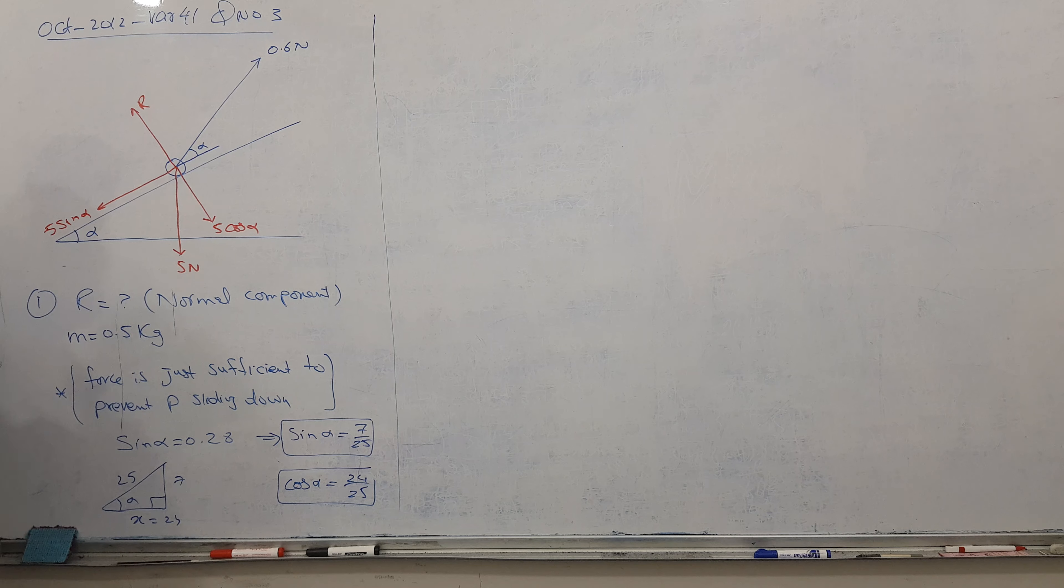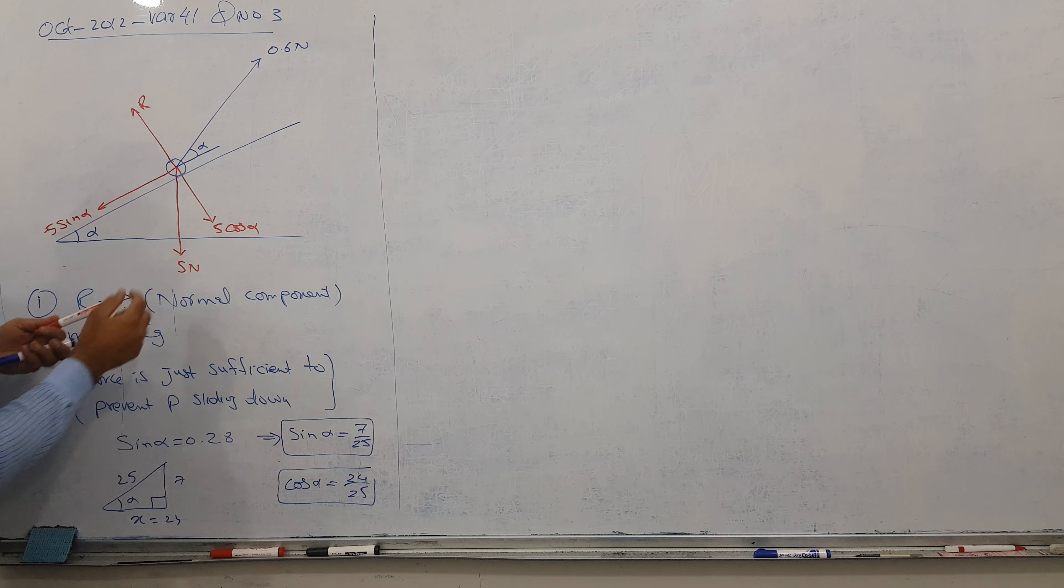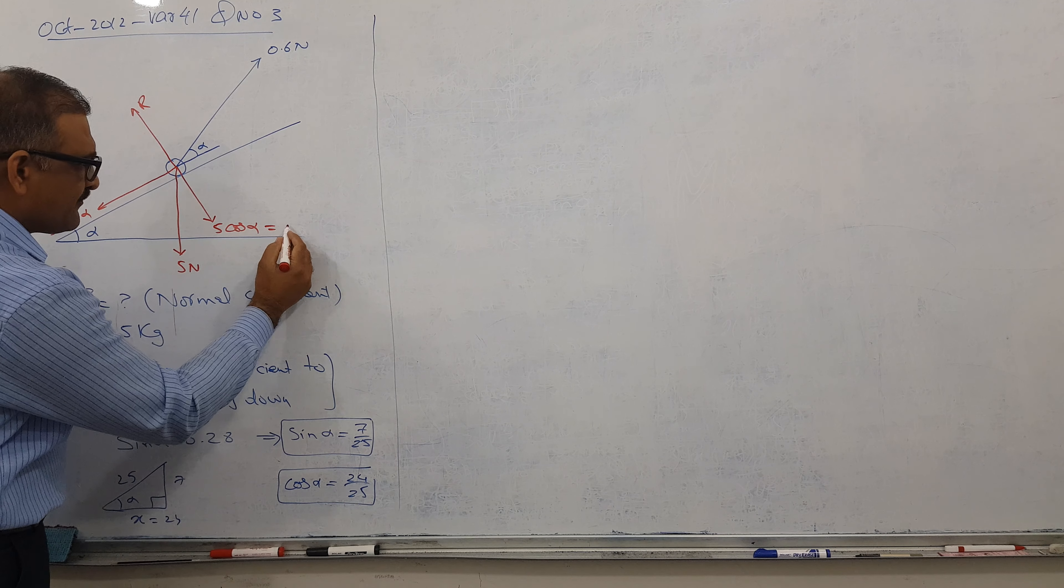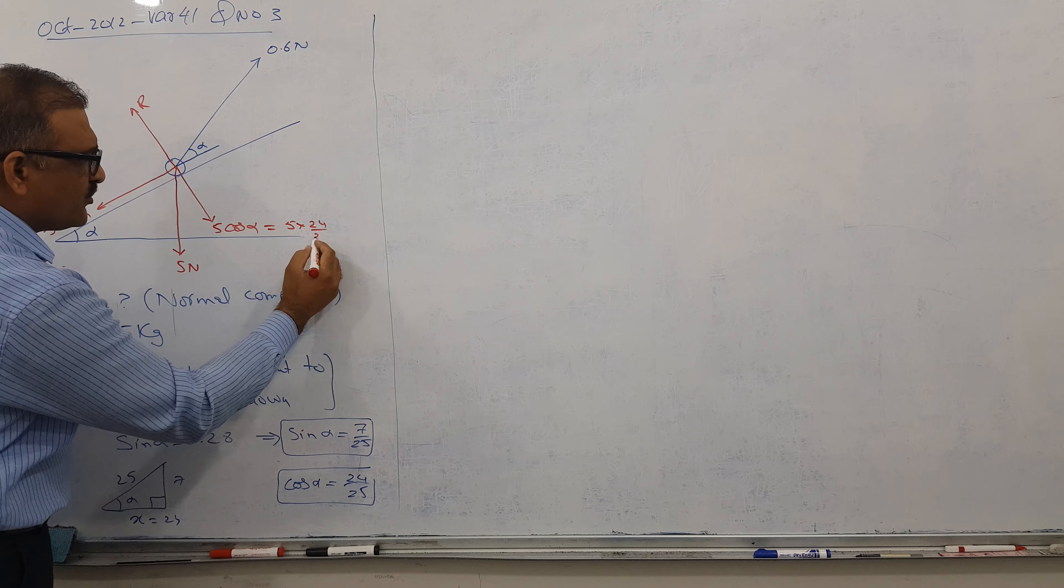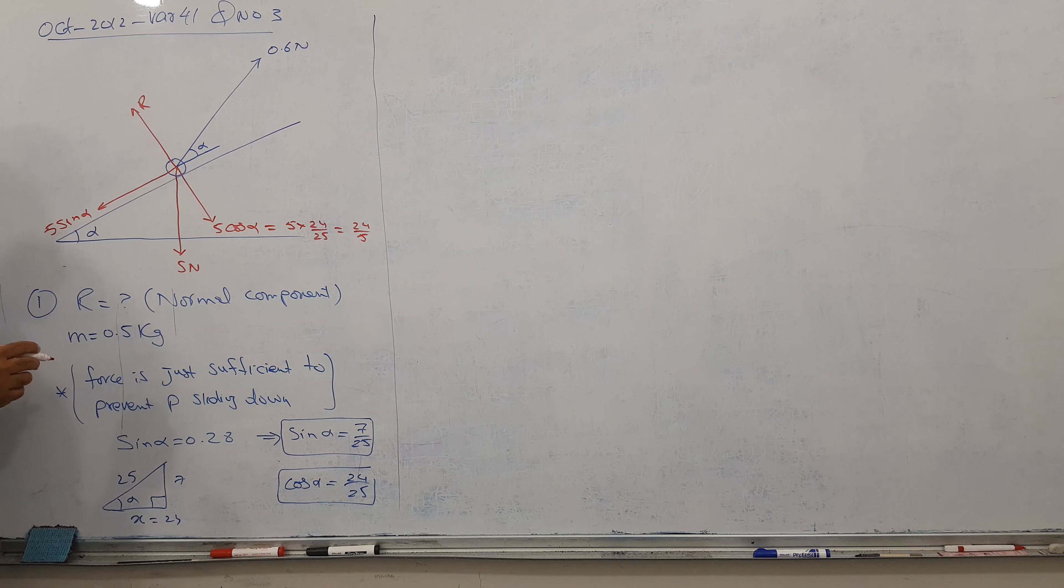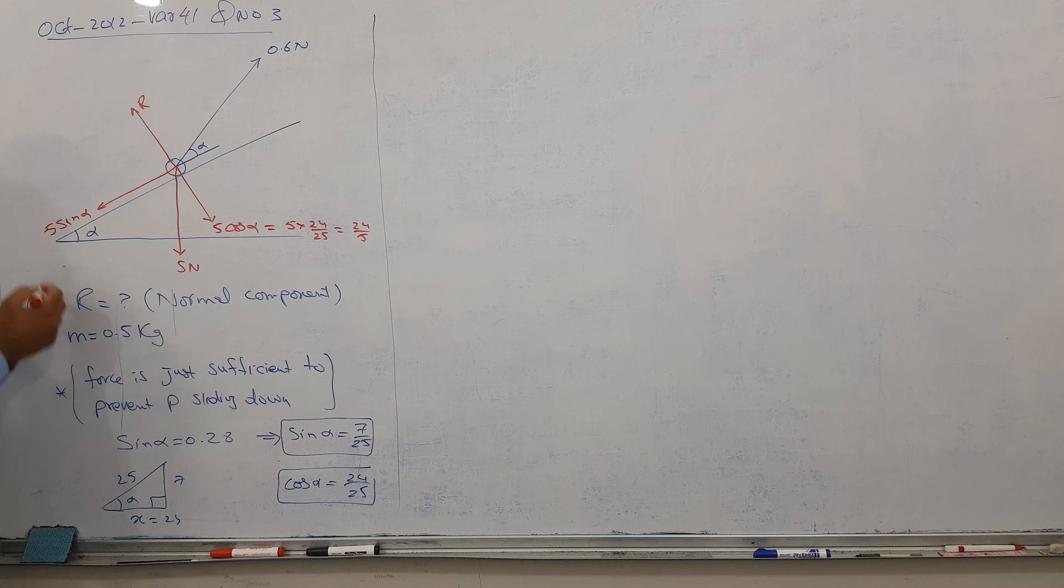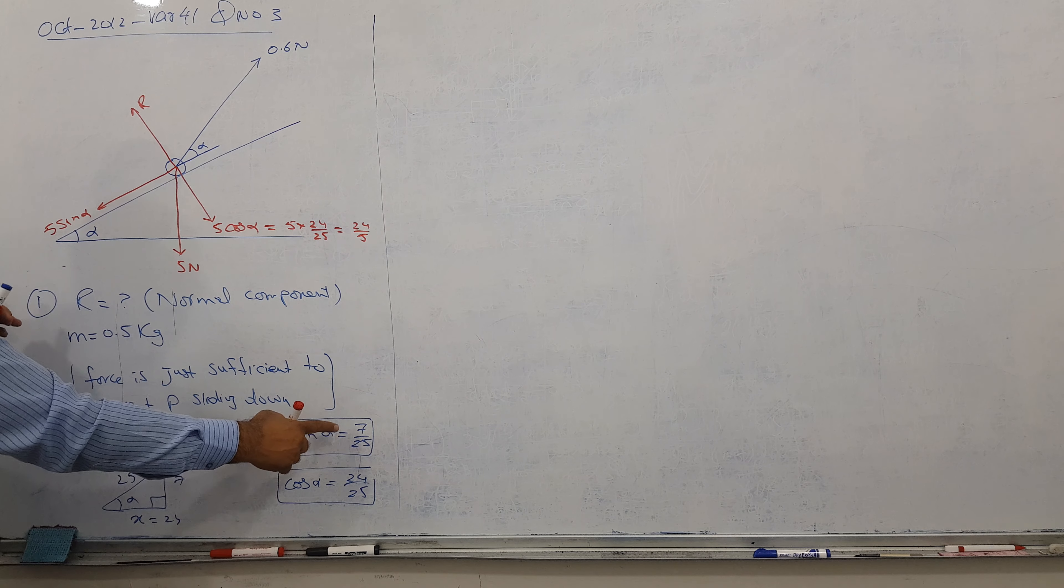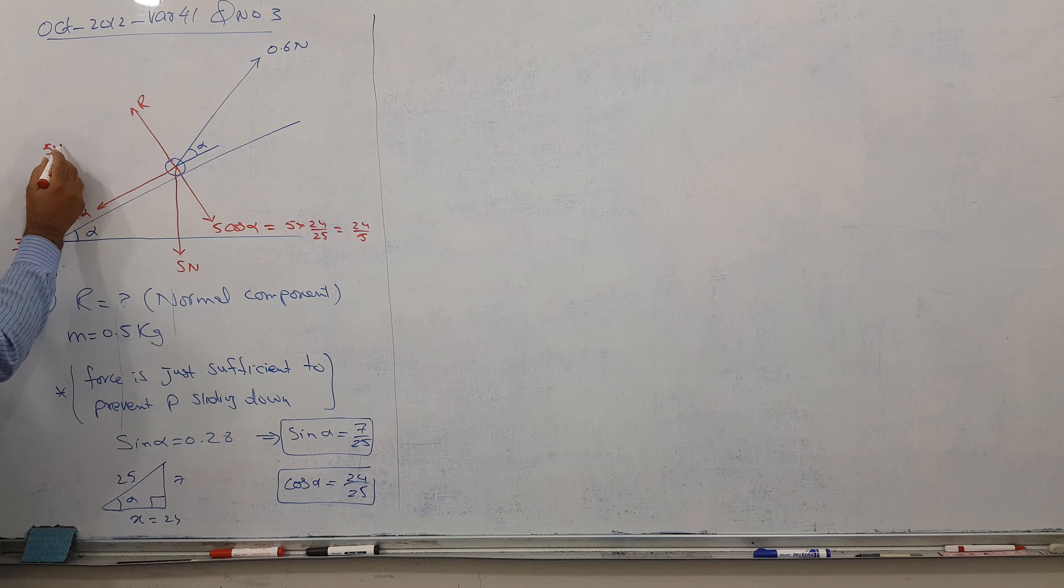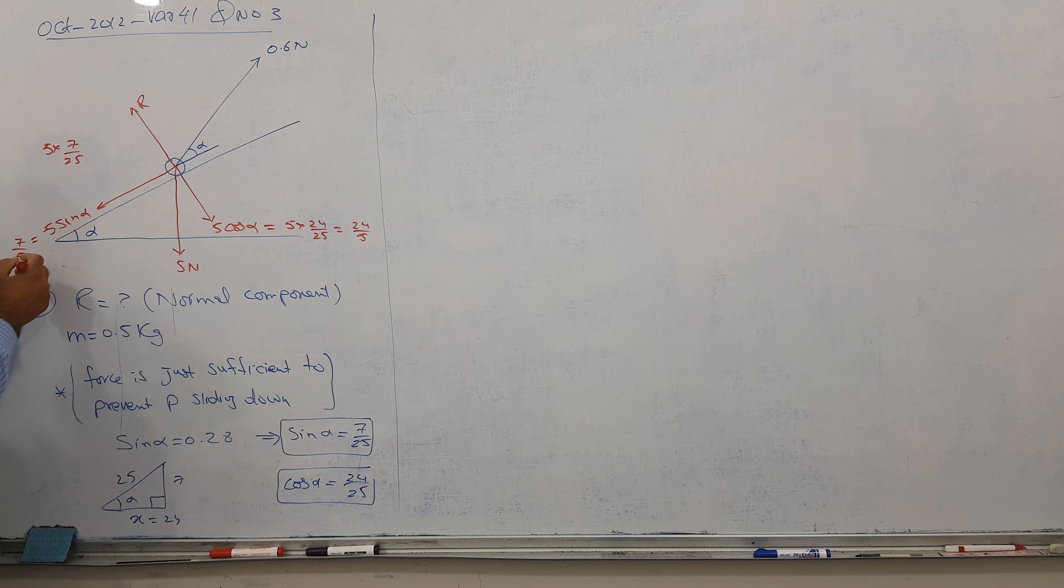I have cos alpha here so I can keep this value. When I keep this value here 24, so into 5, let's see what happens. 5 times 24 over 25 I got 24 upon 5. This is my cos component. And what about sine alpha? I'm going to keep it here so I get 7 by 5. This becomes 7 by 5. How come? 5 times 7 by 25, this cancels, I got 7 by 5.